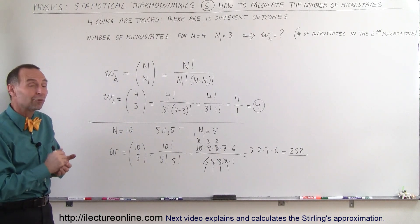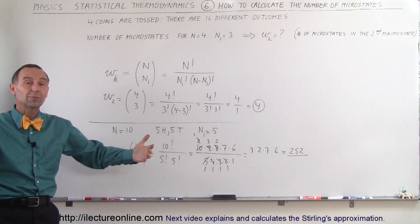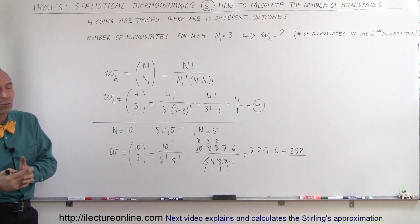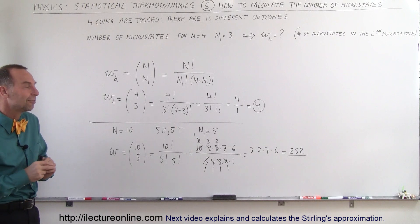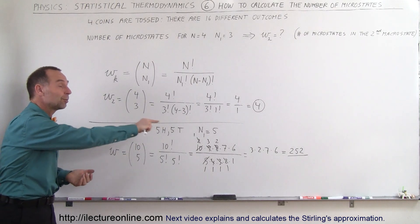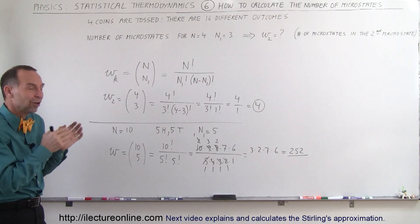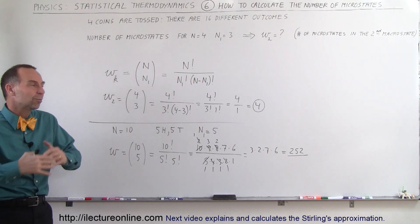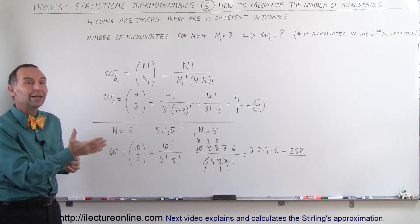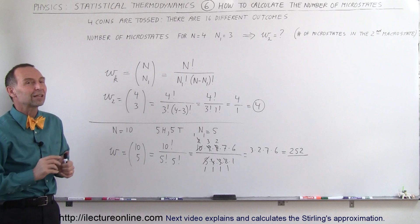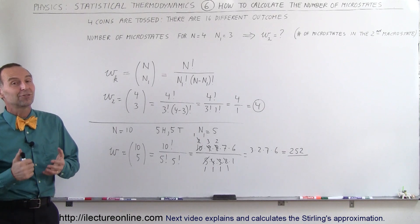Just by going from 4 coins to 10 coins the numbers are already quite large. Now imagine going from 10 coins to 100, to 1,000, or all the way to Avogadro's number — 6.02 times 10 to the 23. The quantity of microstates becomes astronomical, which is why calculating them one by one doesn't make sense. It makes more sense to talk about probability, and that's what we call statistical thermodynamics. Stay tuned for the next videos to see how we do that for larger and larger quantities.